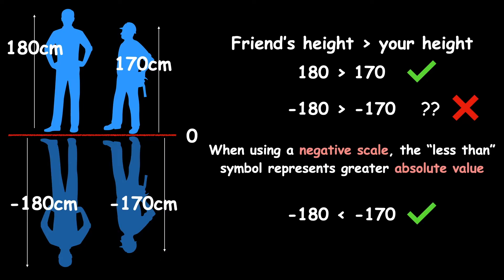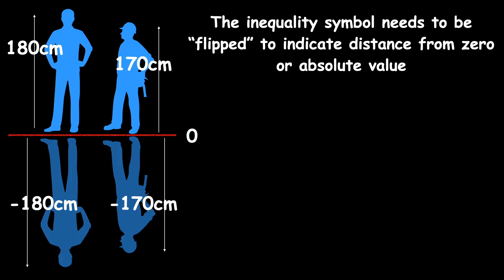So when we're mixing negative numbers with real world examples, the less than symbol actually represents a greater magnitude or absolute value. So this means that the inequality symbol needs to be flipped to indicate distance from zero or absolute value.